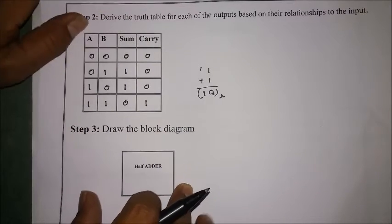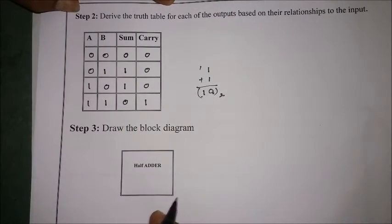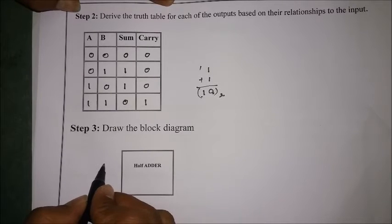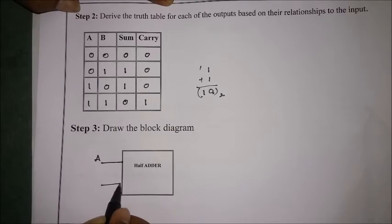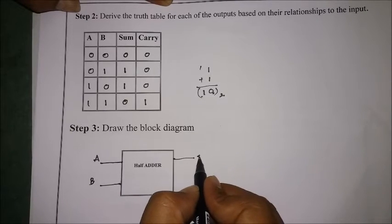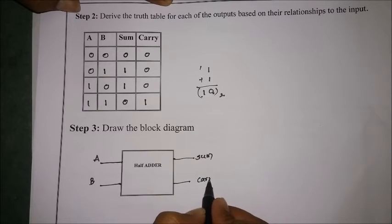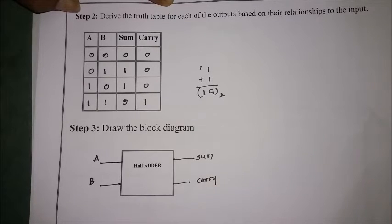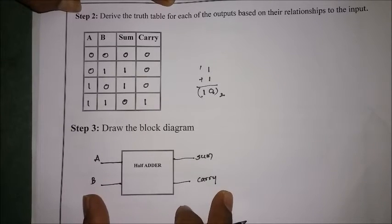The block diagram for the half adder shows two inputs A and B going into a block, with two outputs — sum and carry. This is the third step: drawing the block diagram. Once the block diagram is completed, the next step is simplification of the Boolean expression for each output using a K-map.